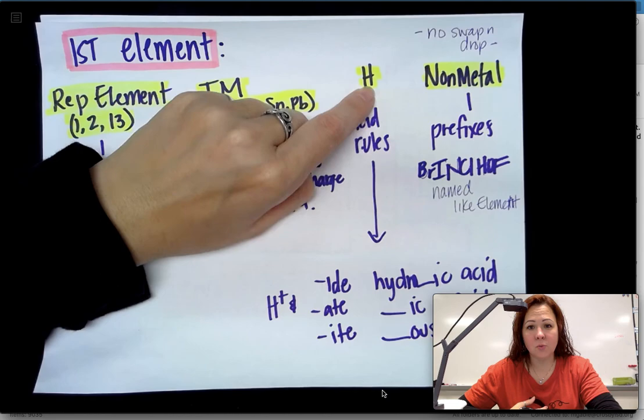The next one is HBr. H is hydrogen, which means we're going to follow our acid naming rules. Hydrogen is paired up with bromide. So with hydrogen pairing up with bromide, I'm going to use hydro-ic. So hydro, instead of bromide, it's bromic, and then acid. So hydrobromic acid.